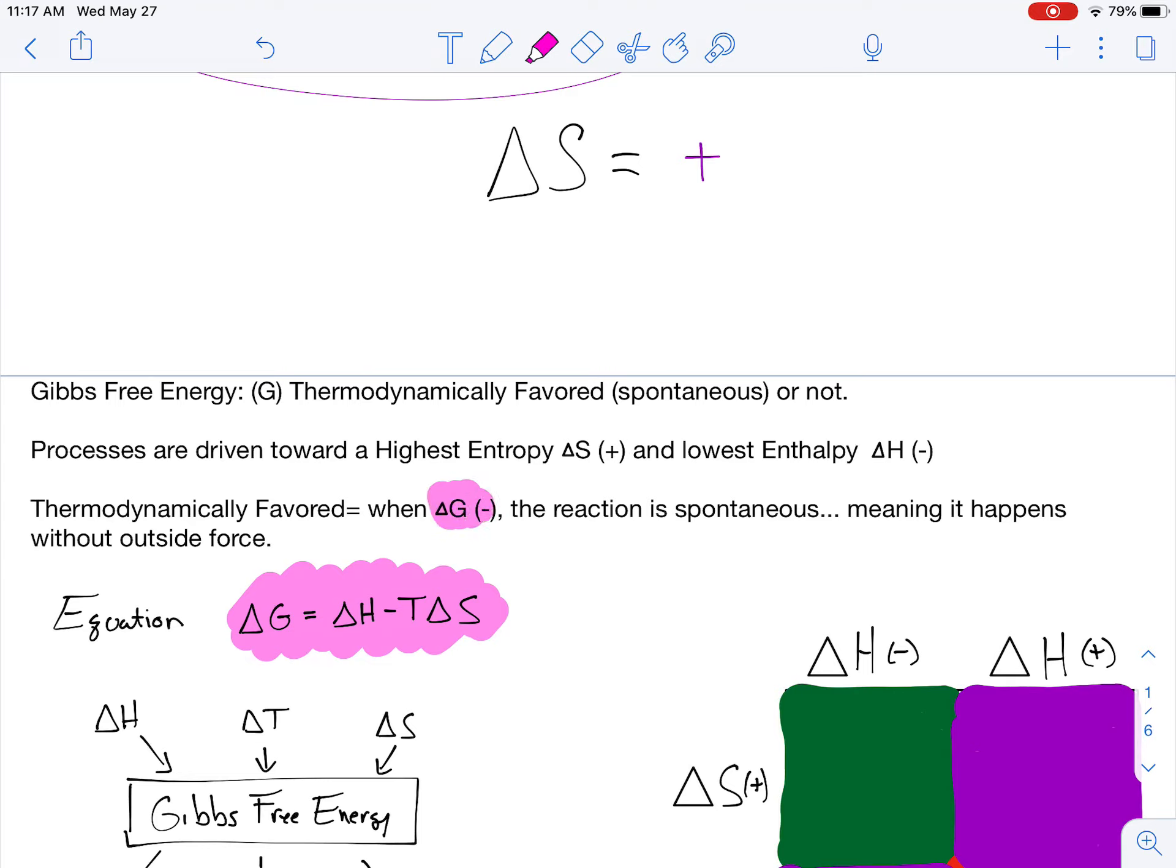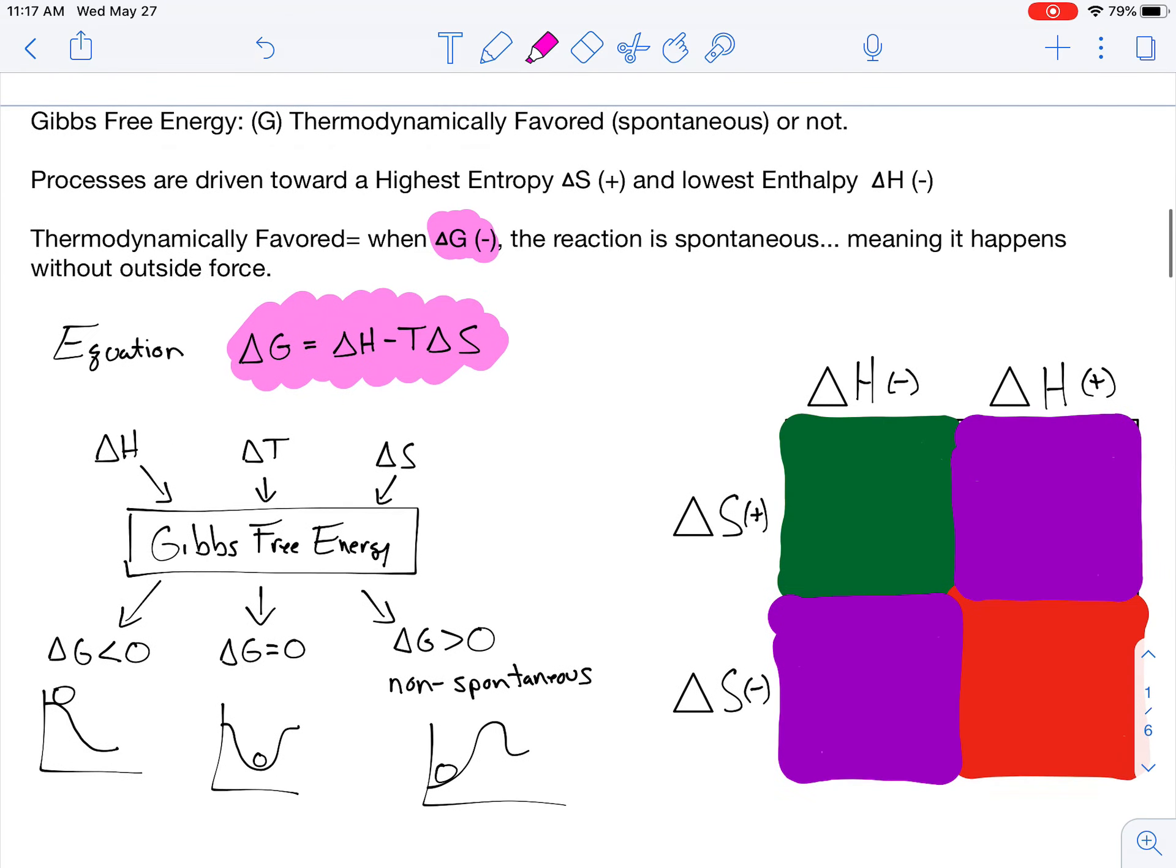Thermodynamically favored is when your delta G value is negative. When it's negative, the reaction is spontaneous, meaning it just happens without any outside force. It'll just naturally occur. If I put some zinc into acid, that delta G would be negative. It automatically reacts. However, a match doesn't ignite by itself. I have to drag it across that little sandpapery strip, and then it ignites. So that would be a non-spontaneous event.